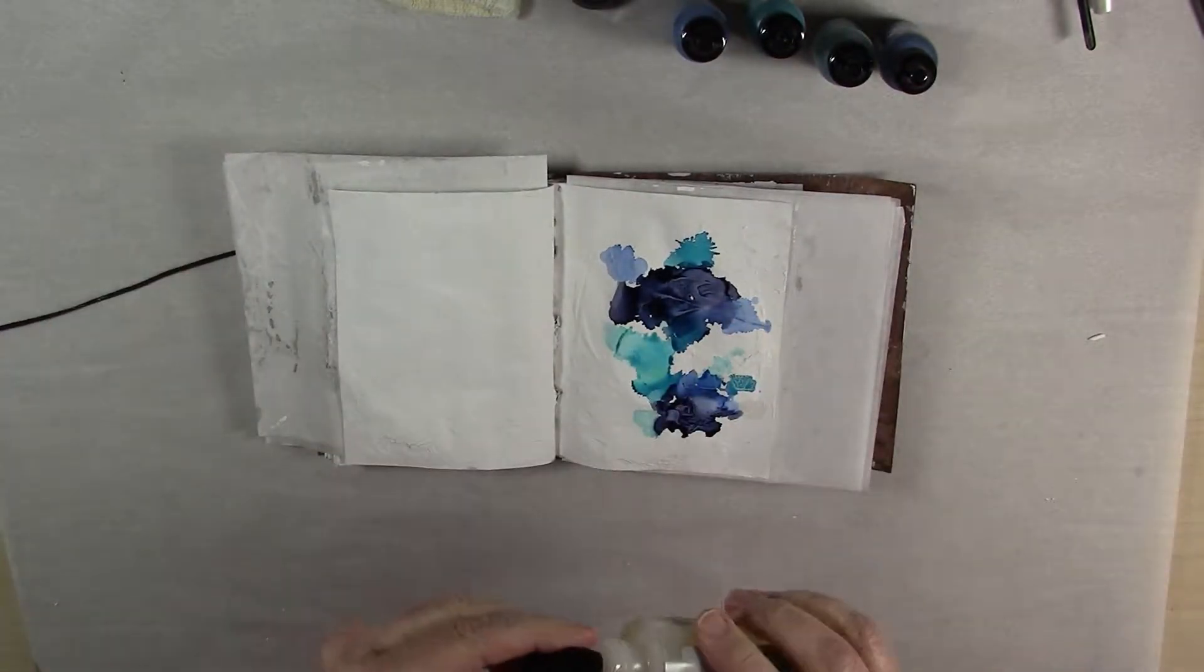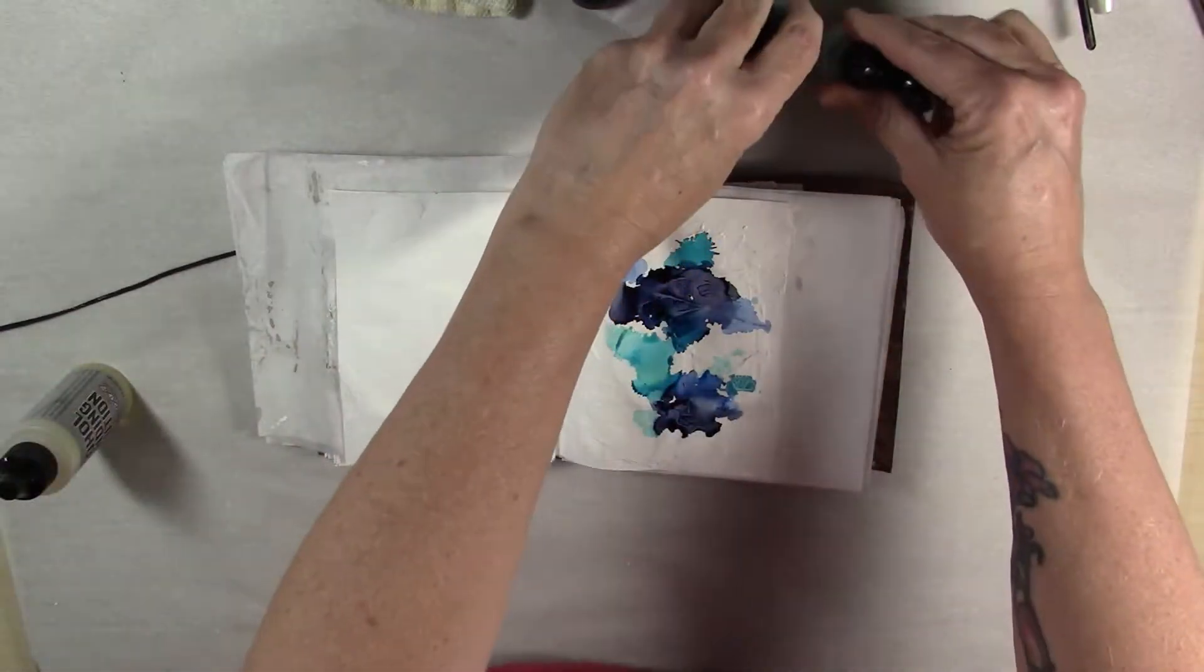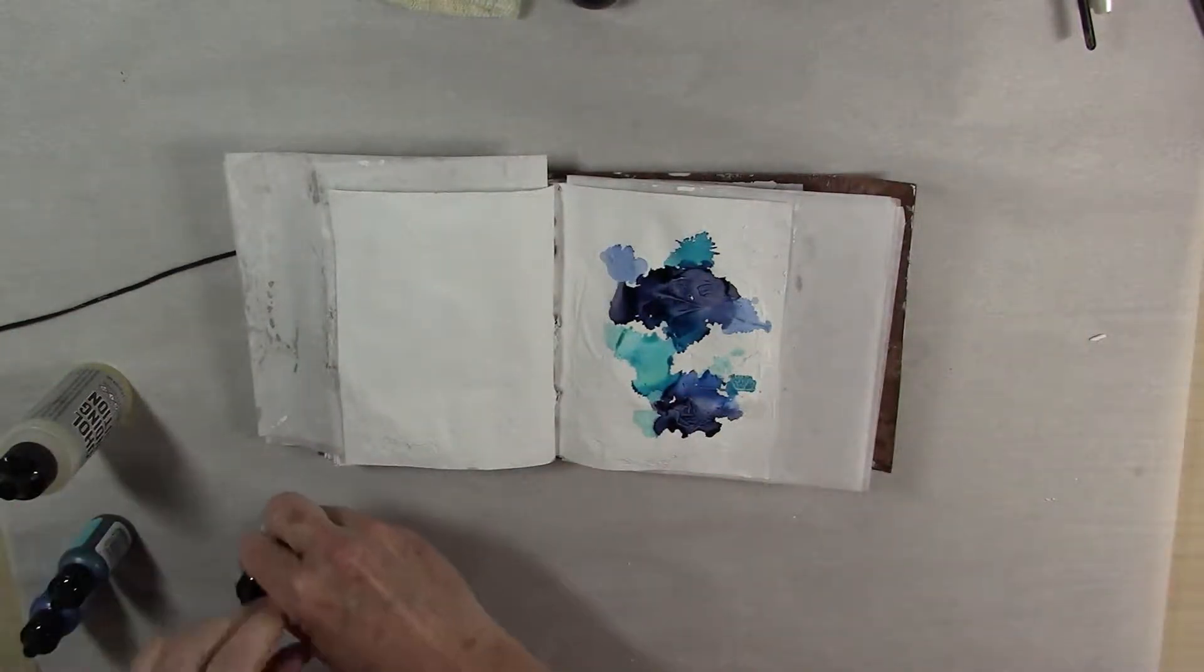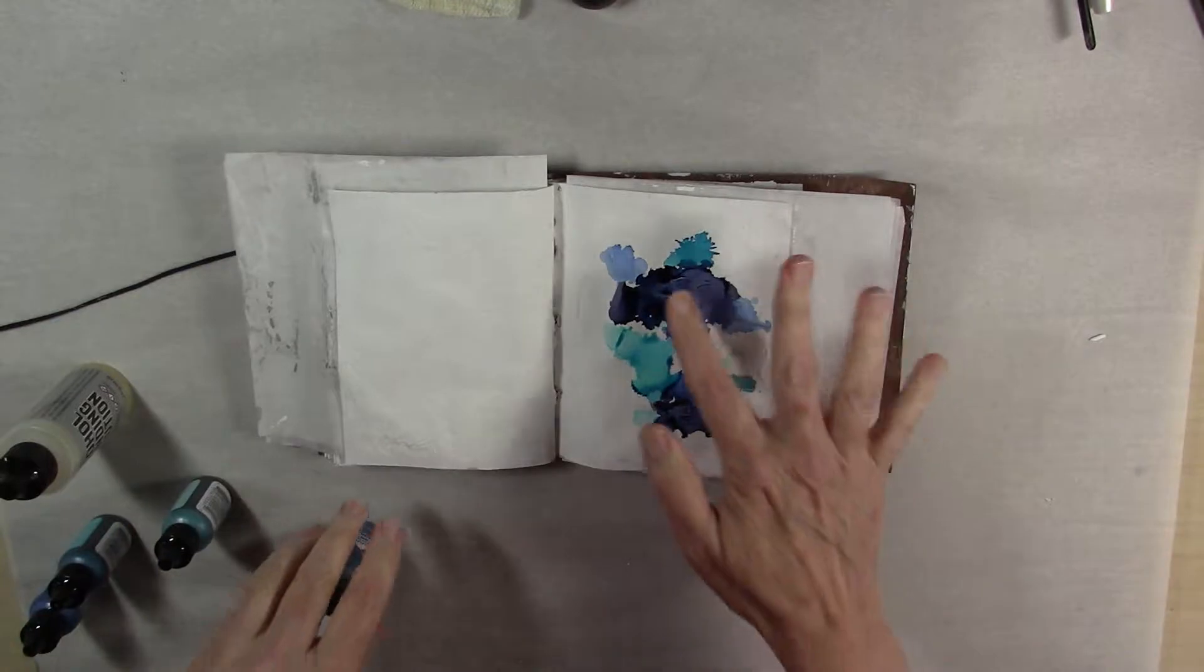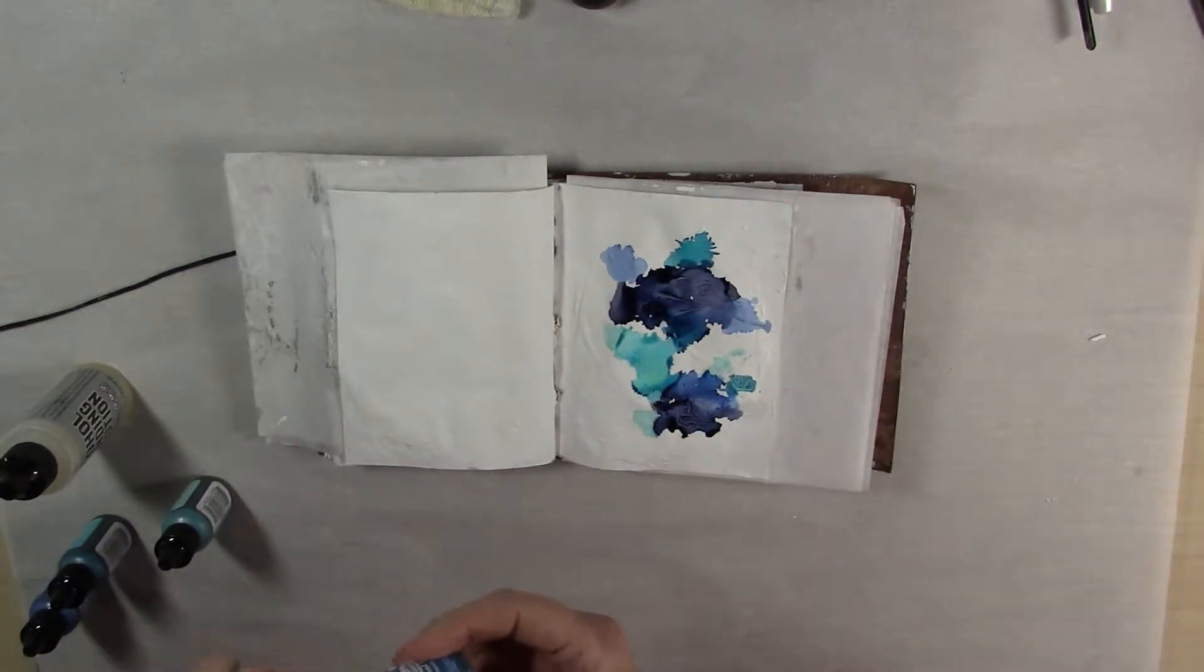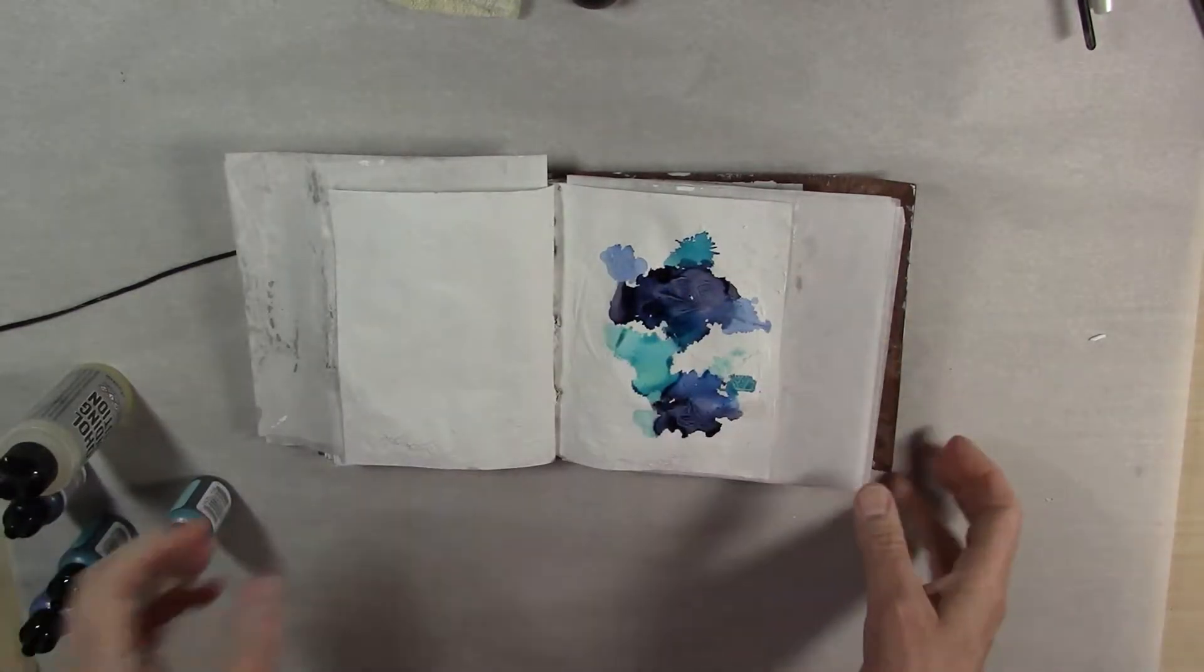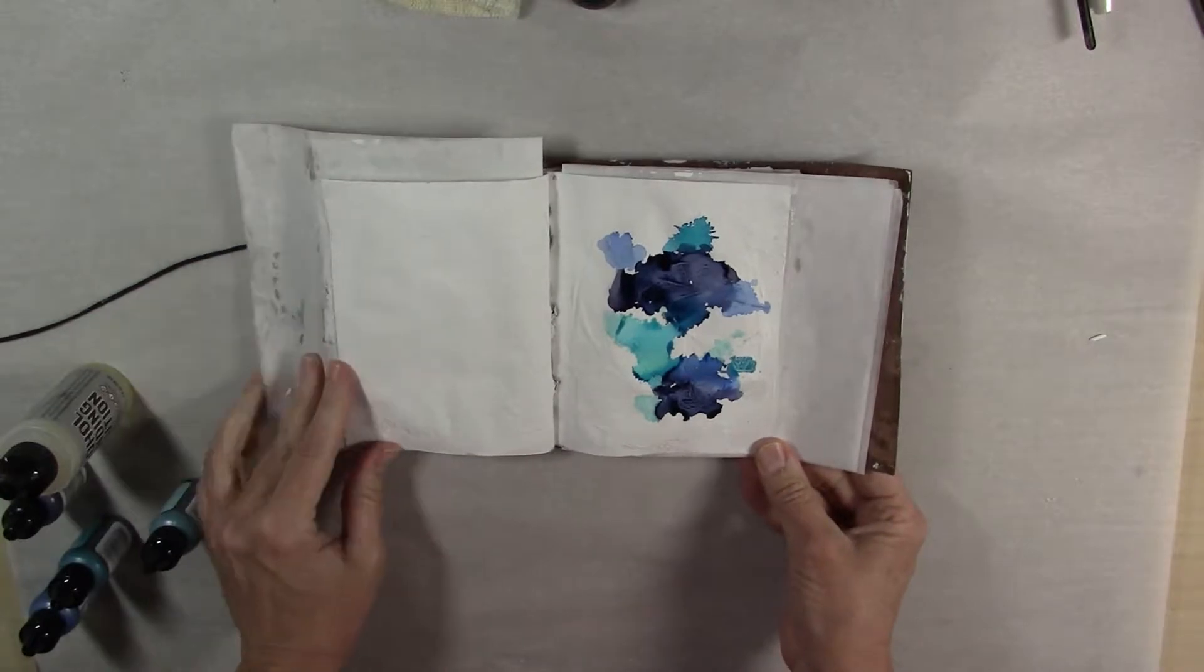So I'm going to go ahead and let this dry and then the next step I'll be writing on the page with my pen, using the shapes that were created here with the alcohol ink as the basis for the design of my page. So I'll be right back as soon as this dries.